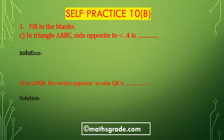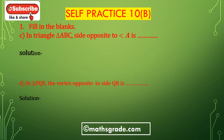Third bit C: In triangle ABC, the side opposite to angle A is BC.